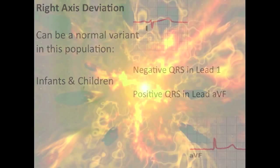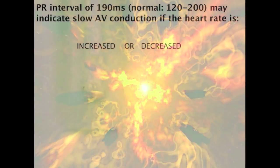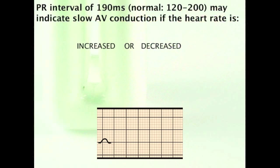Although within the normal range, a PR interval of 190 milliseconds may indicate slow AV conduction if the heart rate is increased or decreased.